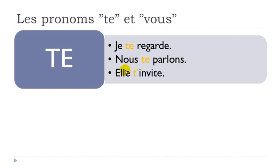Last example for TE — I chose on purpose the verb INVITER (to invite), because it starts with a vowel. As usual in French, when you get this E and then another vowel, the E disappears: ELLE T'INVITE — she invites you. ELLE T'INVITE. Remember, the pronouns must be placed before the verb. It will be exactly the same thing for the VOUS pronoun.